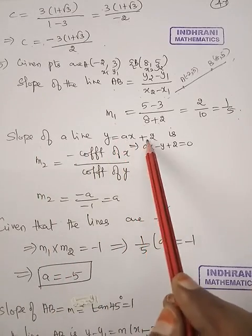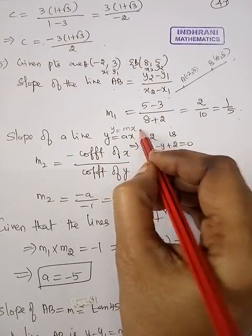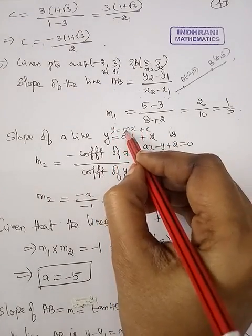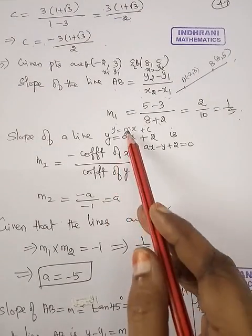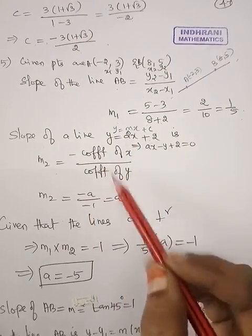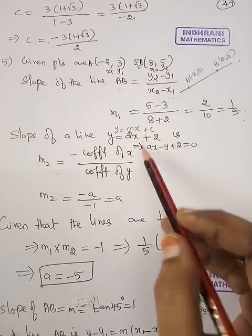Of the line y equal to ax plus 2, so it is in the form y equal to mx plus c. This is the direct slope, m2 equal to a. This is the formula.